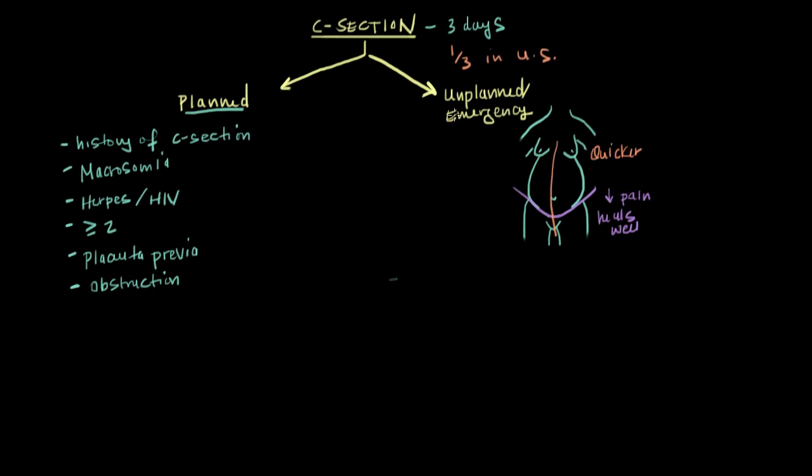In other cases, the mom plans on having a vaginal delivery and she goes through with it, but plans change during labor and she needs to have an emergency C-section. Some of the reasons for an unplanned emergency C-section include contractions that are not strong enough to get the baby out, labor isn't progressing as quickly and effectively as it should. If labor lasts too long that can be detrimental to the baby, it could lead to the baby not getting enough oxygen. So we decide to go in through an emergency C-section to get the baby out as quickly as we possibly can.